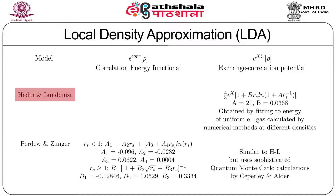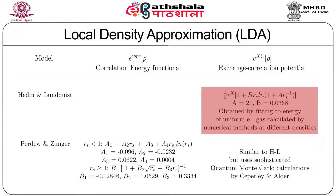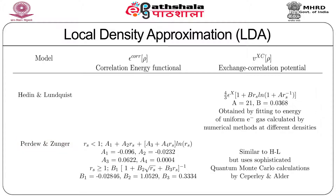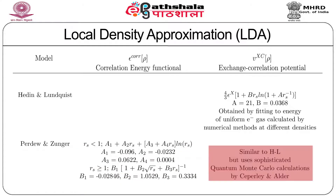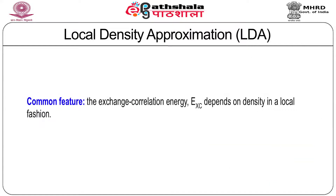In the approximation given by Wigner, the exchange correlation functional has coefficients a=0.884 and b=7.8, obtained by interpolation between known limits. In the model given by Hedin and Lindqvist, the exchange correlation potential has a more complicated form with specific coefficient values, obtained by fitting to the energy of a uniform electron gas calculated by numerical methods at different densities. The model given by Perdew and Zunger takes two different forms depending on whether r_s is less than one or greater than or equal to one, and uses sophisticated quantum Monte Carlo calculations by Ceperley and Alder.